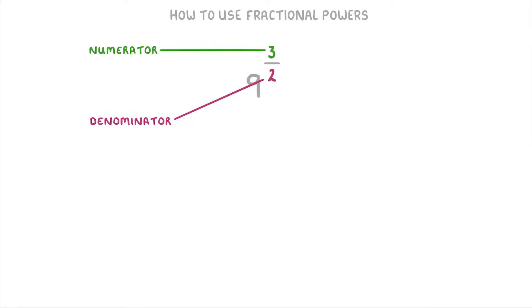The numerator tells you the power you need to raise your number to, and the denominator tells you the root you need to take. So here, the 3 tells us we need to cube the 9, and the 2 tells us we need to take the second root, which just means the square root.